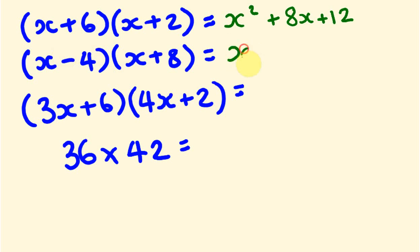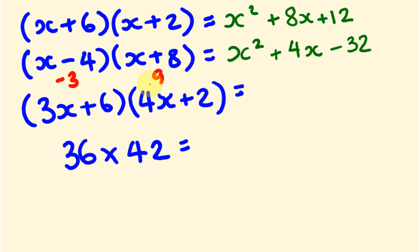What about the next one? We go x times x, which is x squared. Then the last part: minus 4 times 8, which is minus 32. And then rainbow multiplication: 8 times x and minus 4 times x. So 8x take away 4x is 4x, because 8 take away 4 is 4. We can check this one — these ones with negatives can make you feel a bit uncertain. Substituting 1 in: 1 take away 4 is minus 3, times 1 plus 8 which is 9, giving minus 27. And checking our answer: 1 plus 4 is 5, take away 32, which is also minus 27. Our answer is correct.